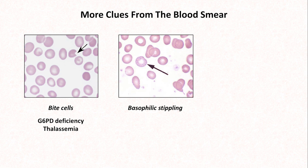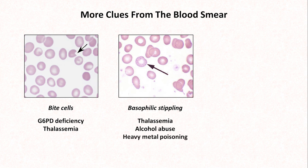Basophilic stippling — the bluish-purple speckles within the cytoplasm of an erythrocyte — represents ribosome precipitates. This can be seen in thalassemia, alcohol abuse, and heavy metal poisoning.